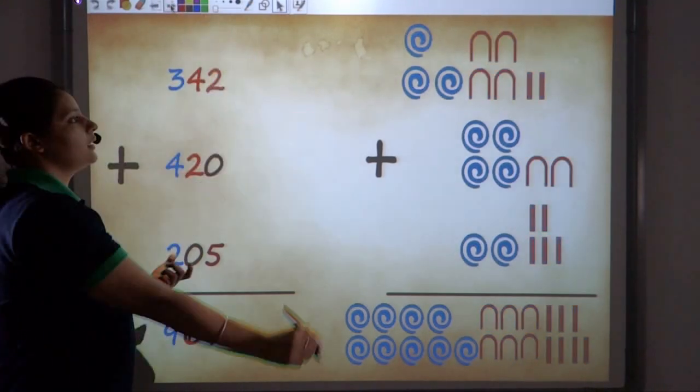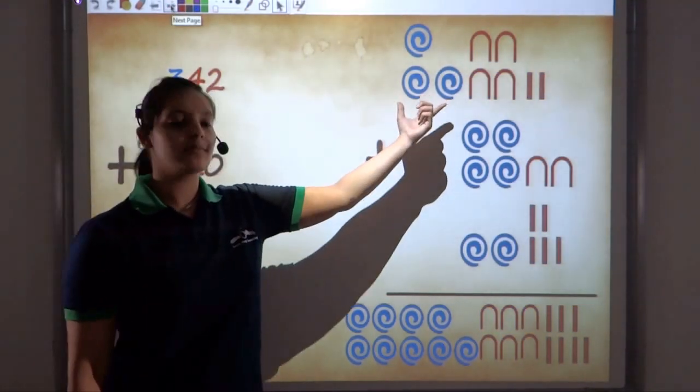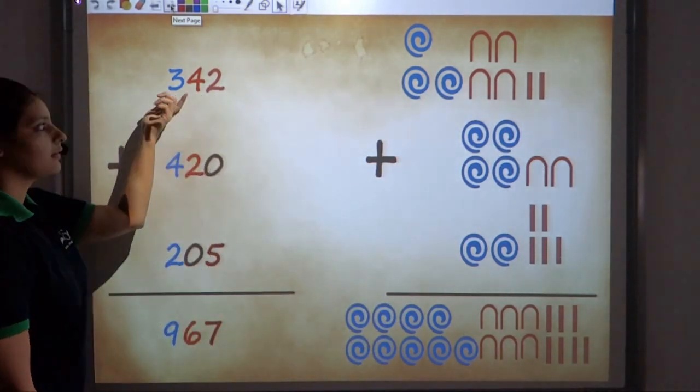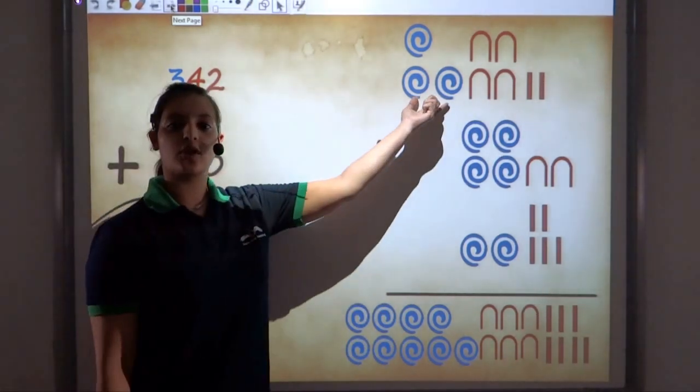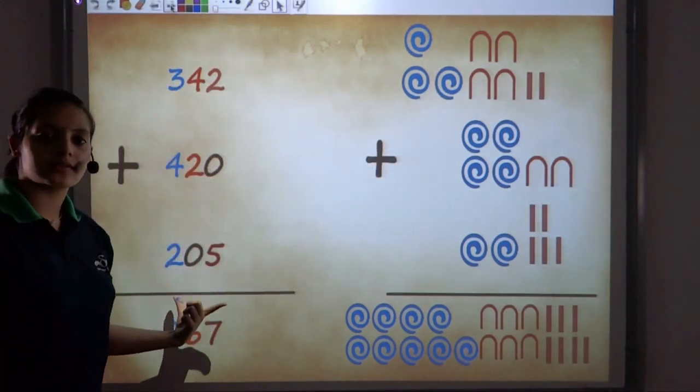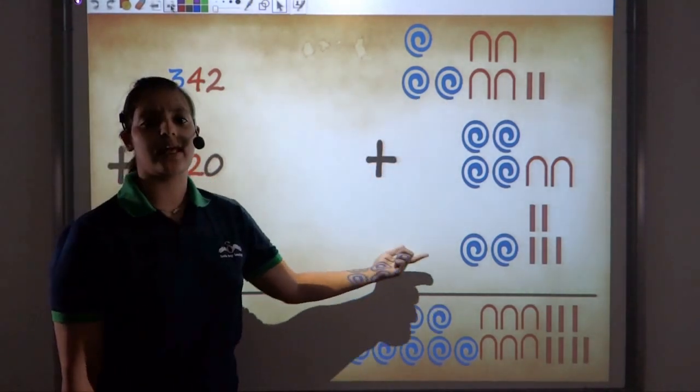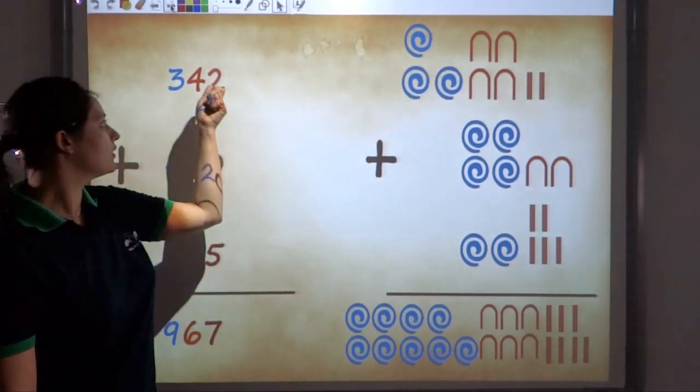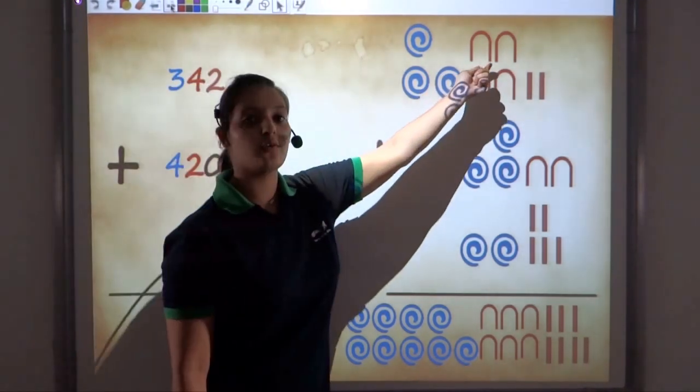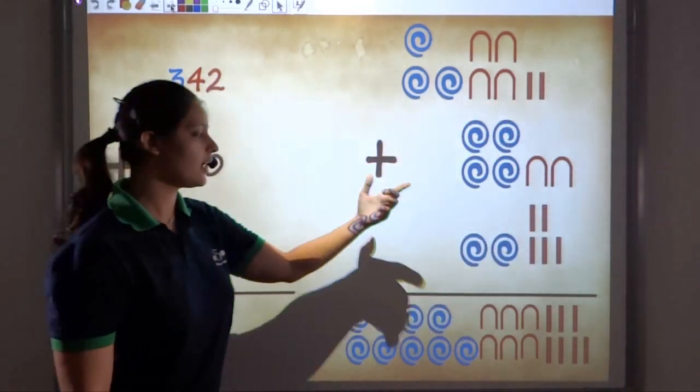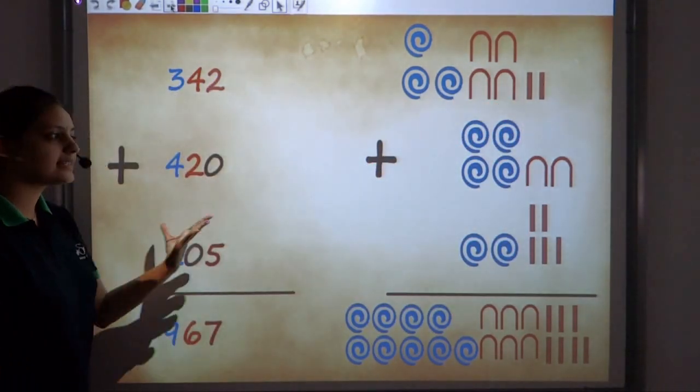If I look at the Egyptian number system as groups of symbols, if I group the symbols together, and compare these groups of symbols with the digits of our modern number system, then you would find some similarity. Three hundreds, three hundreds, four tens, four tens, two ones, two ones, and so on. You will find some similarity.